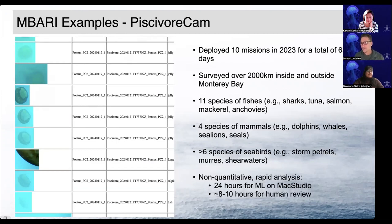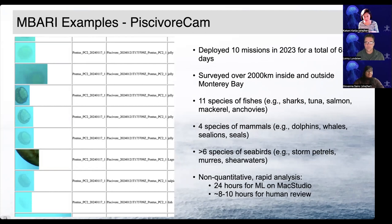We end up with about 10,000 observations, but it takes about eight hours for a human to go through those — it's a pretty fast process now. In 2023, we had 10 missions deployed for a total of 65 days, surveying over 2,000 kilometers inside and outside Monterey Bay. We found 11 species of fish including sharks, tuna, and salmon, four species of mammals, and a lot of birds. This is really about finding the needle in the haystack — rapid processing of a lot of data. It takes about 24 hours for the machine learning model to run and about eight hours for a human to review results.